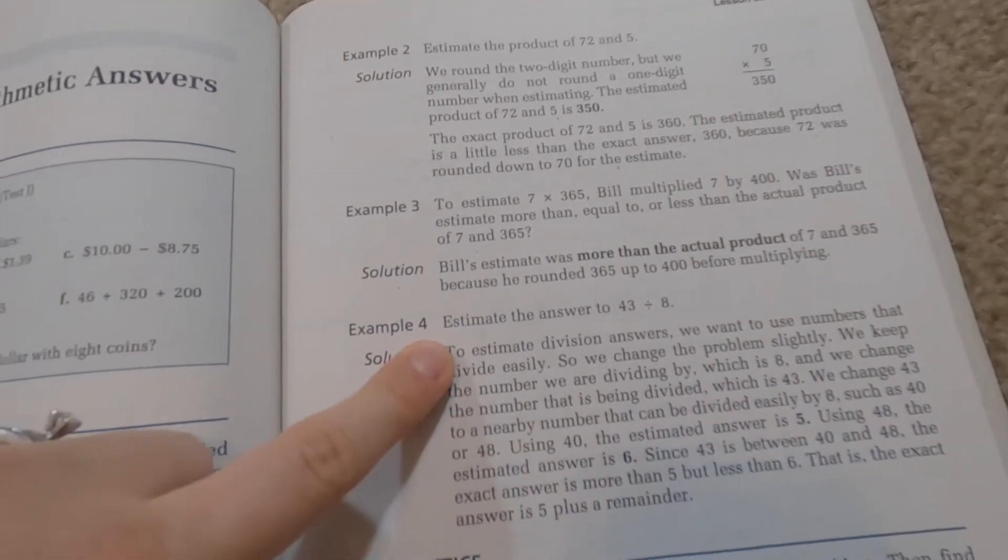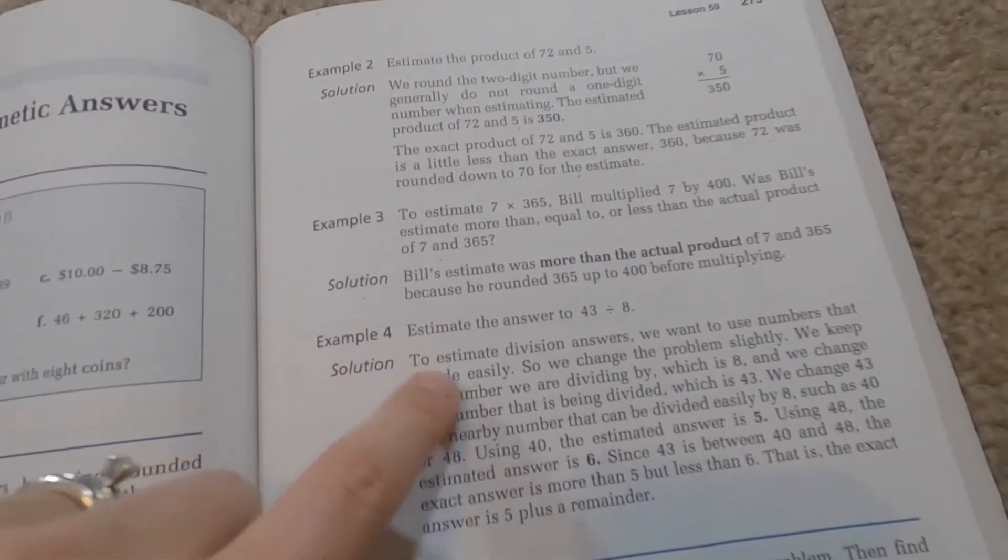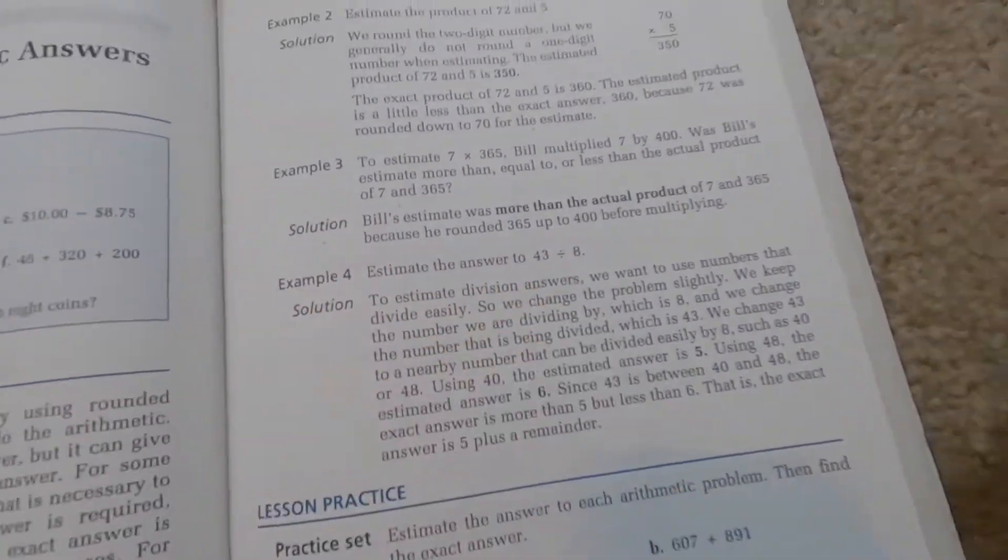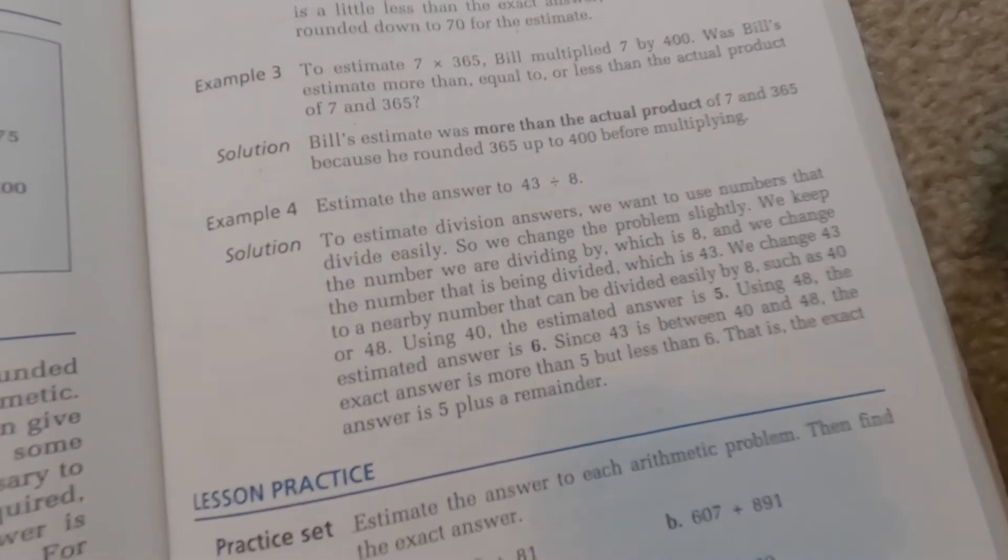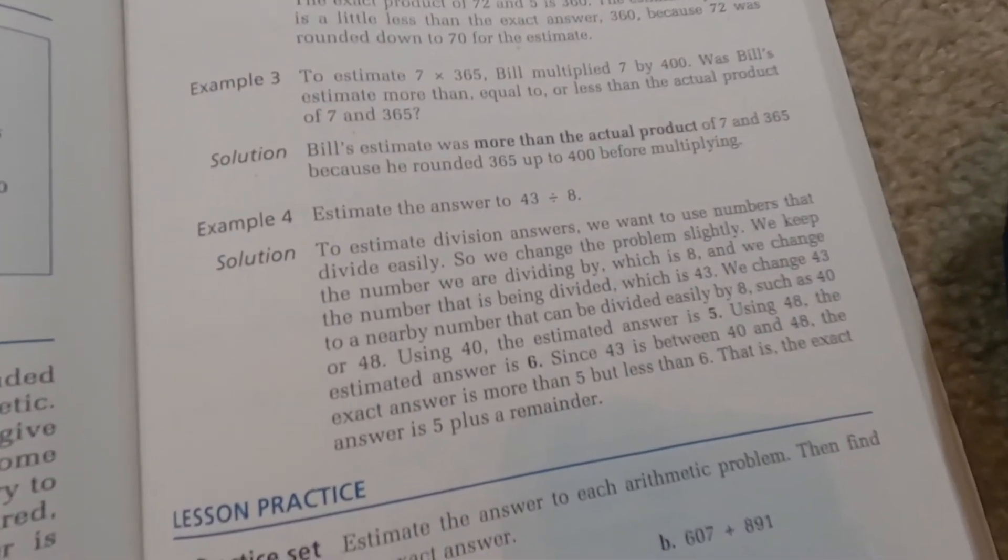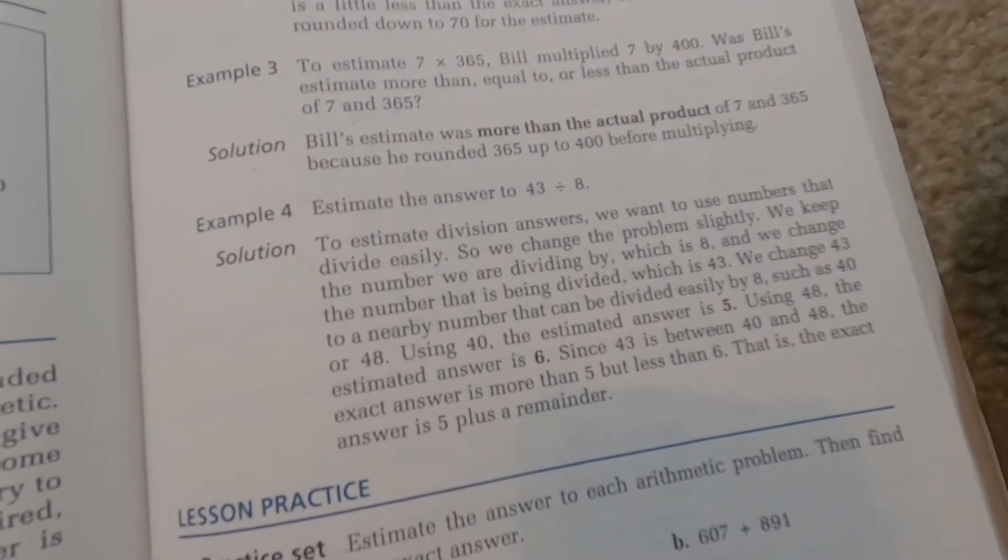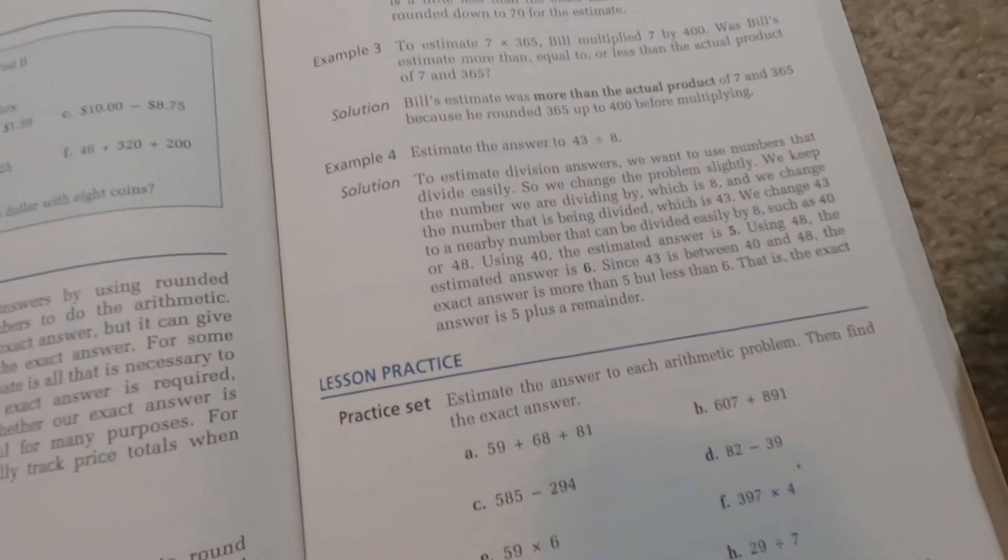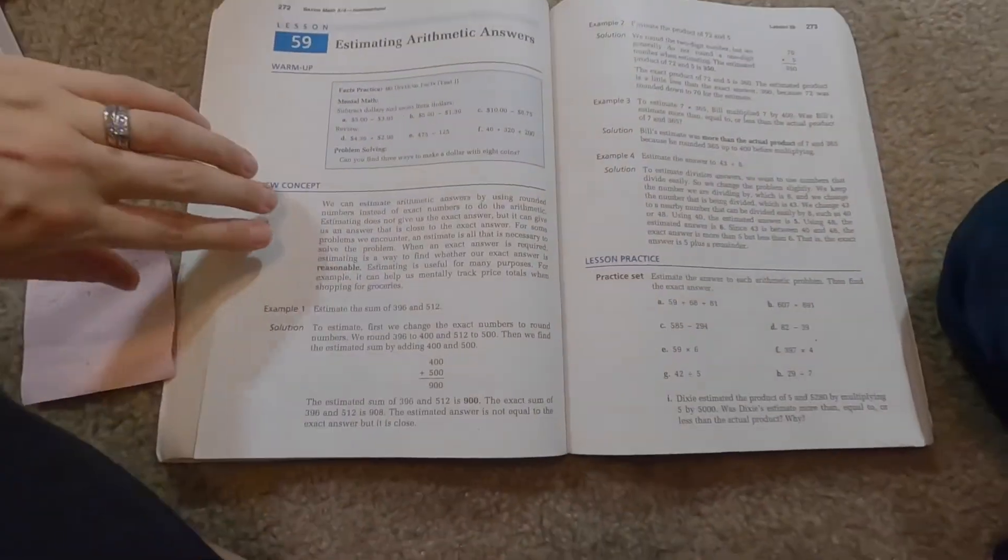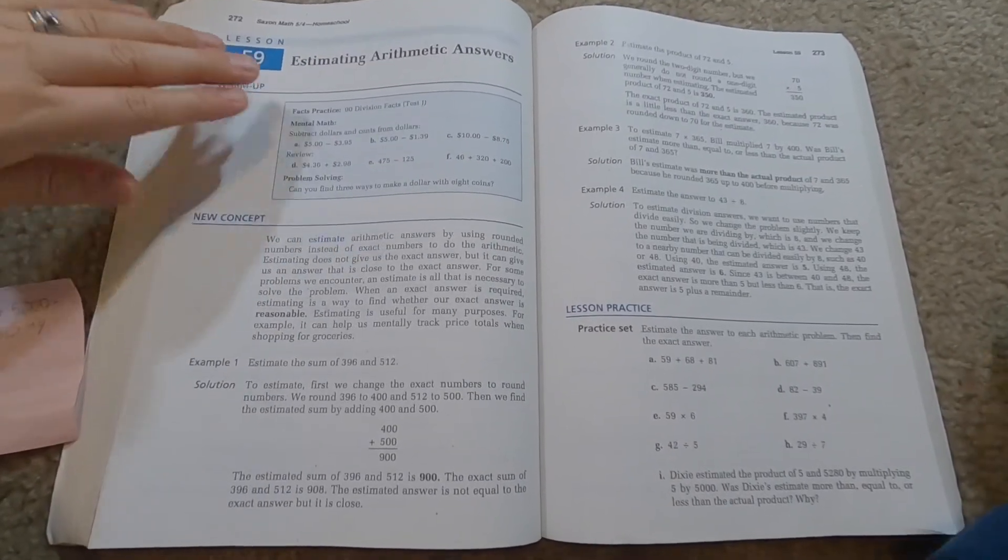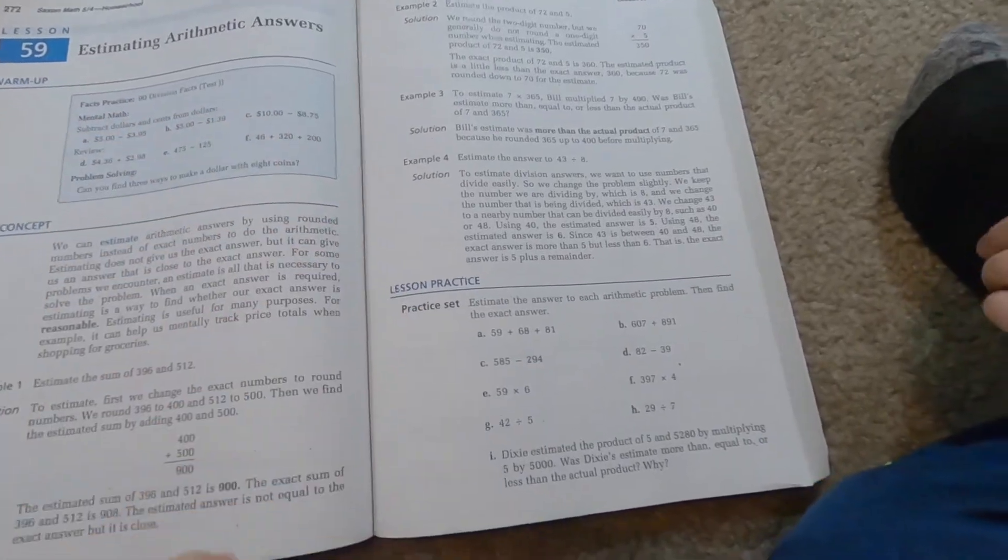Now here, this one says estimate the answer to 43 divided by 8. So then the answer to 43 divided by 8 must be somewhere in between 5 and 6. Does that make sense? Okay. All right. So that is it. We covered the entire new concept of our lesson. We did the warmup, the mental math. We did our new concepts here and went over some examples. Now it leads us to our lesson practice.